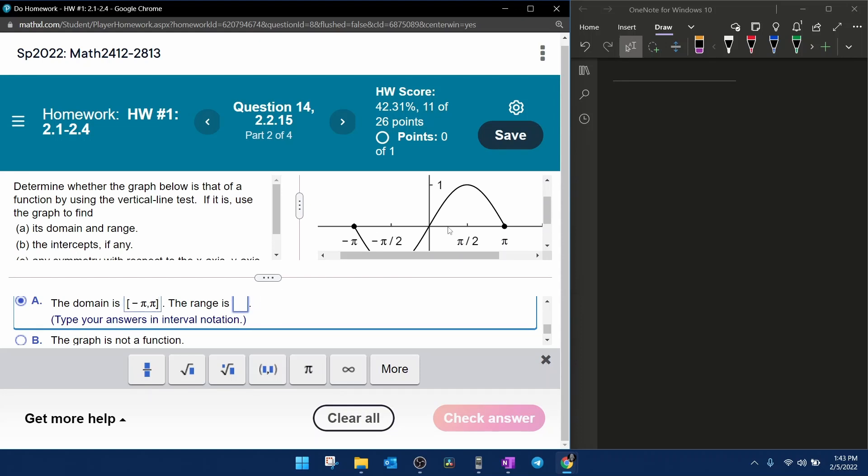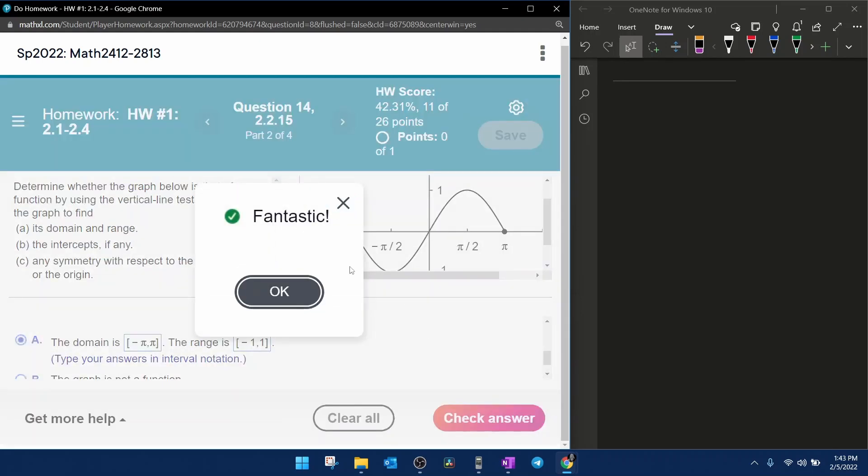Now the range are the values that y can be, notice that the lowest value that this graph can be is negative one. That is also going to be a bracket because it does actually touch down at negative one. And the highest value that this graph ever gets to be is positive one. So we're going to input a one with a bracket, again, because it touches up at one. And that's going to do it for domain and range.